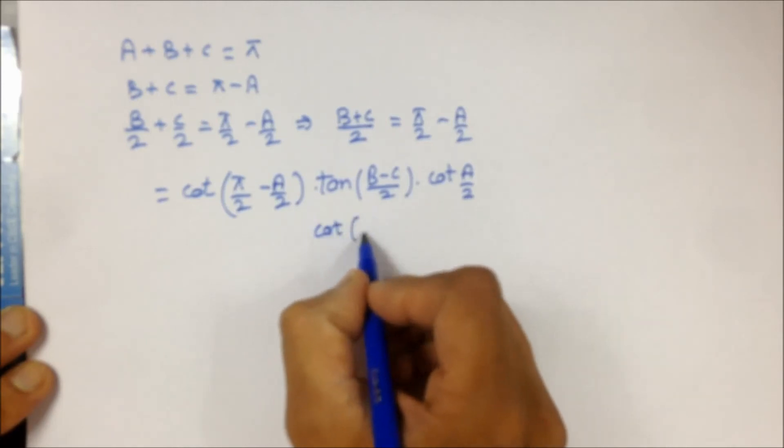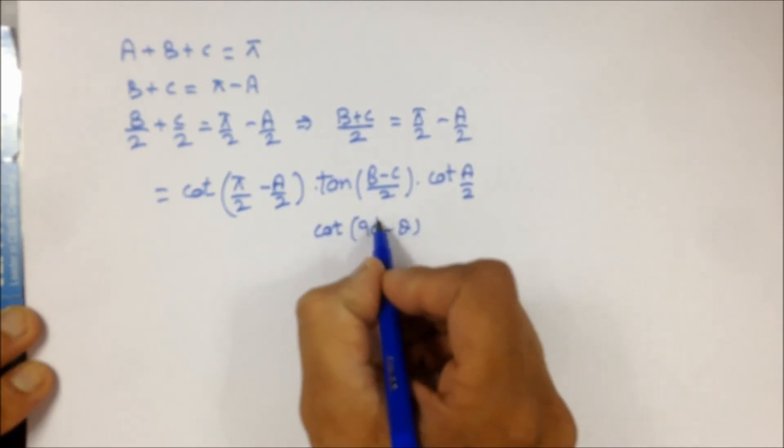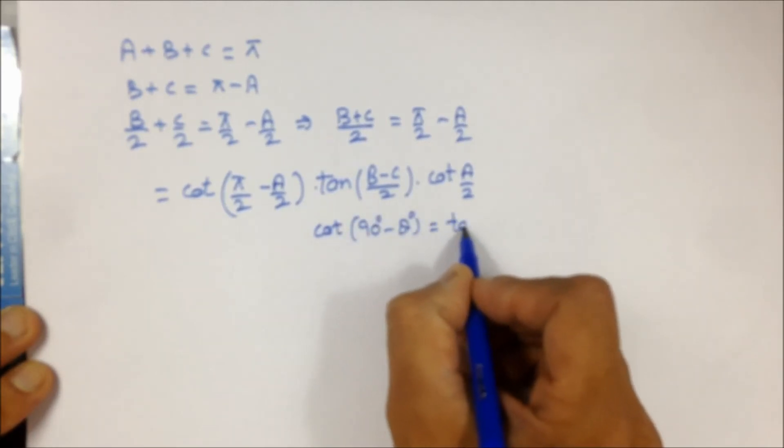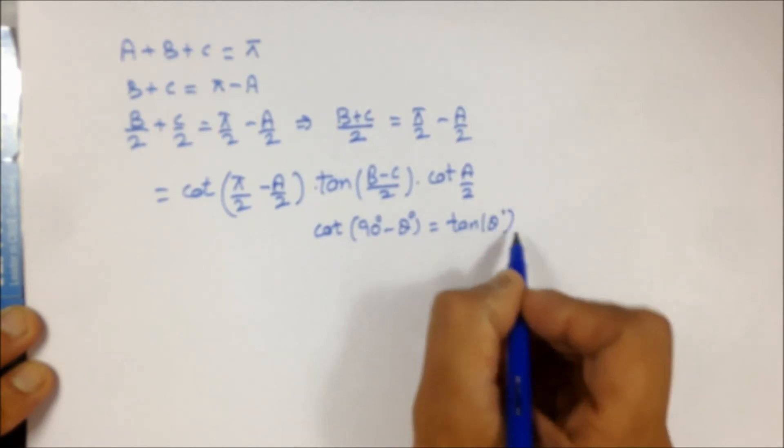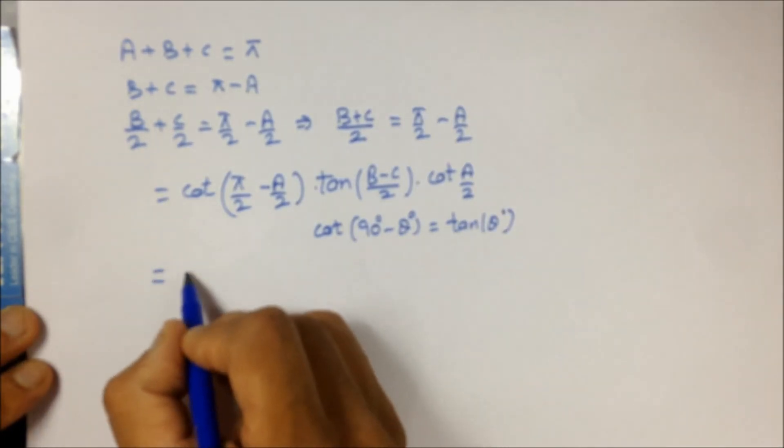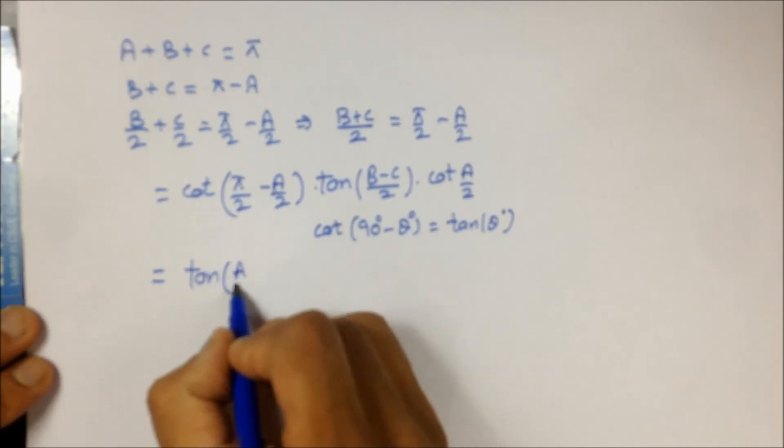Now tell me, what is cot(90° - θ)? That is equal to tan(θ). So using that, this cot will turn to tan(A/2), with tan((B-C)/2) and cot(A/2).